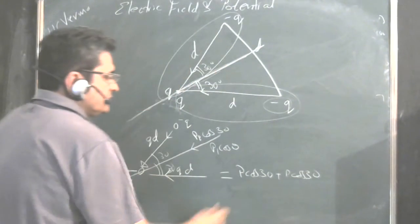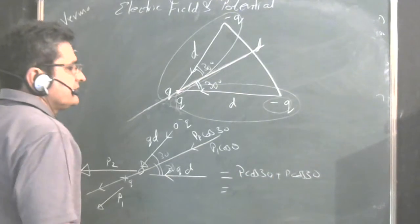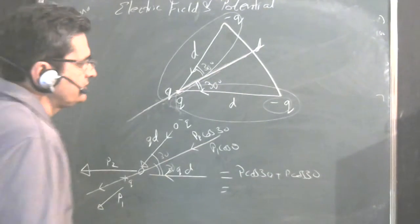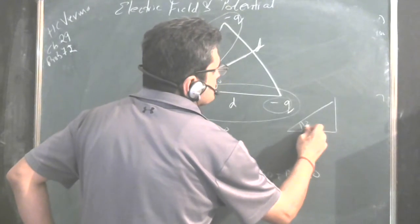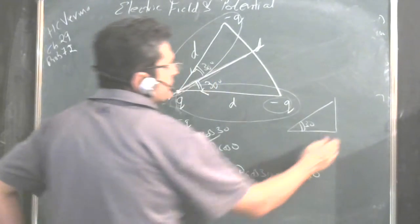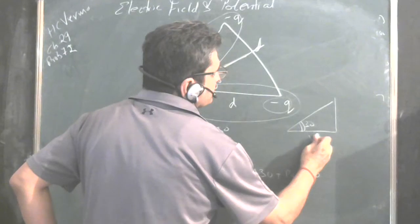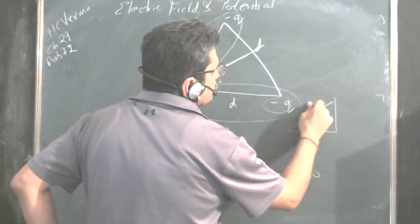What is the value of cos 30? Cos 30 is nothing but root 3 upon 2.